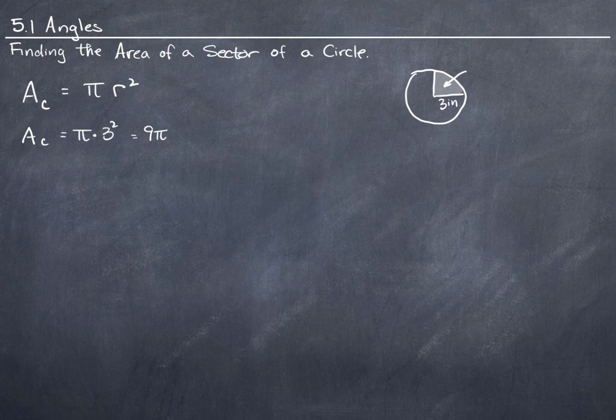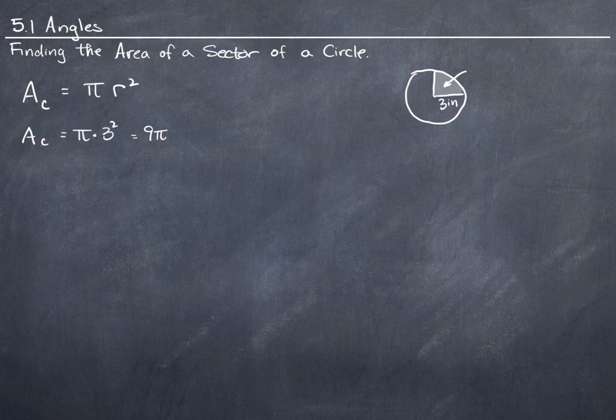But I don't want the area of the whole circle. I just want the area of this part of it. The sector that I've drawn is really close to 90 degrees, and technically it's not 90 degrees, but we're going to pretend that it is for a couple of different reasons.